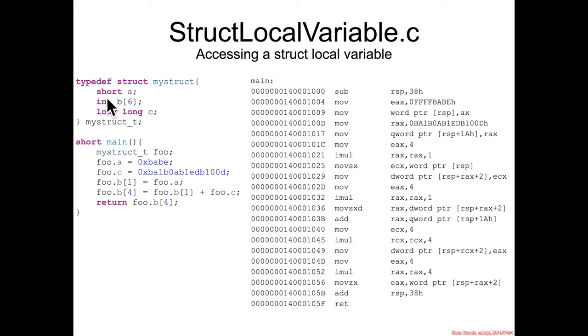This time we're going to take those same three things: the short a, the int b with six elements, and c. Let's put them into a struct and instead allocate a struct as a local variable on our stack.